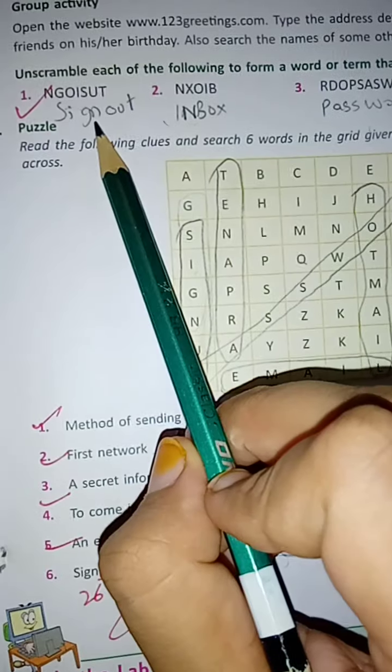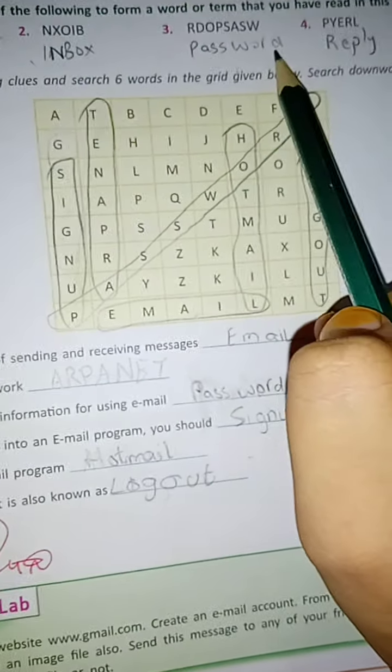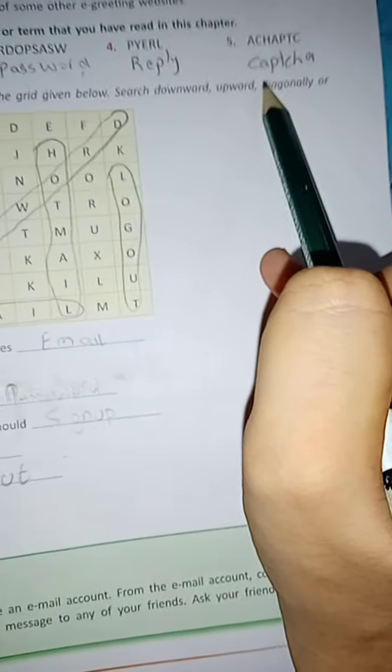First word is sign out. Second, inbox. Third, password. Fourth, reply. Fifth, captcha.